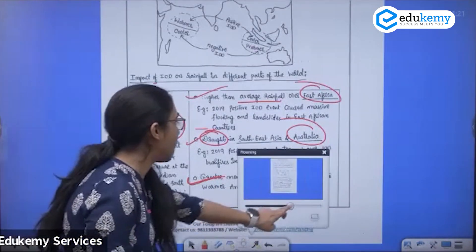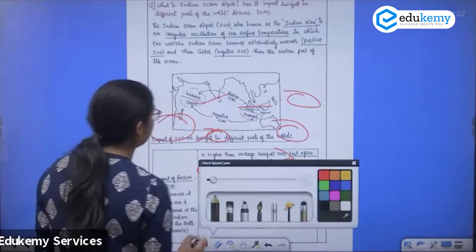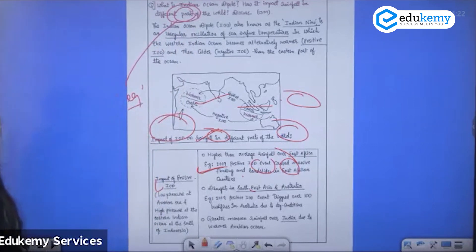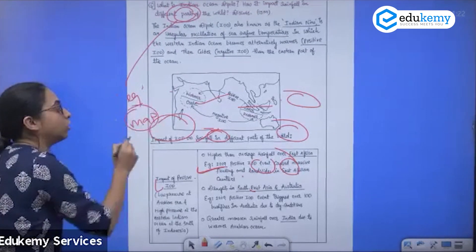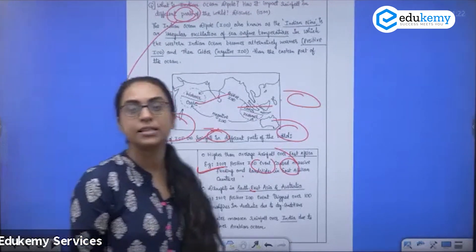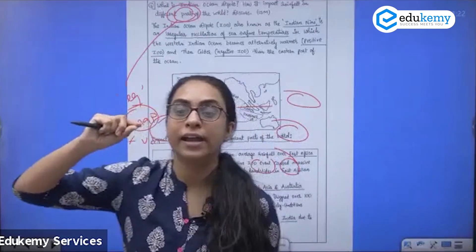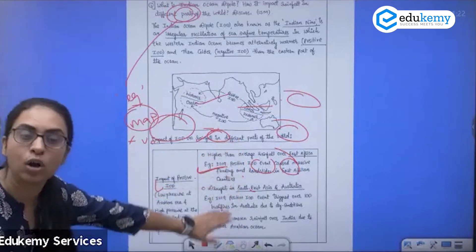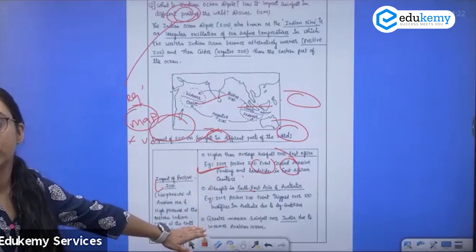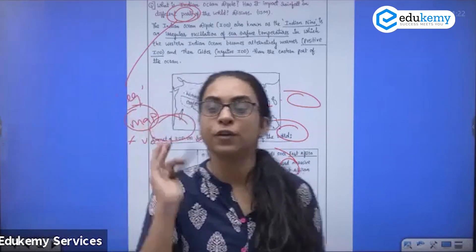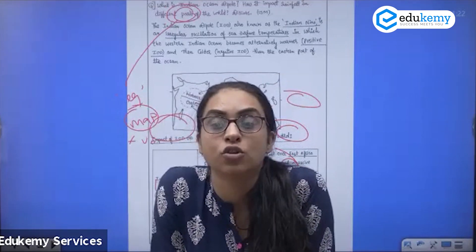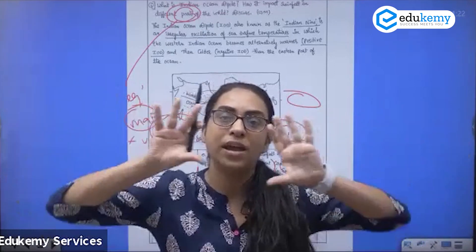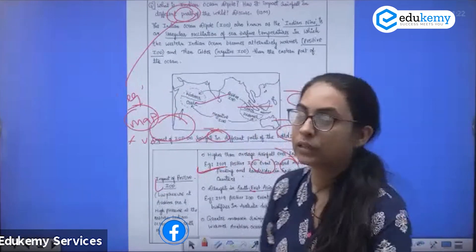When writing this answer, remember to give world examples because the question asks about different parts of the world. A map is important, and both positive and negative IOD should be shown. If you have a lot of information, compress it into a table format.